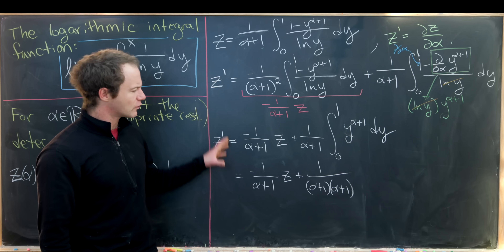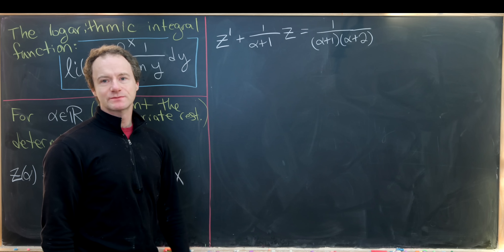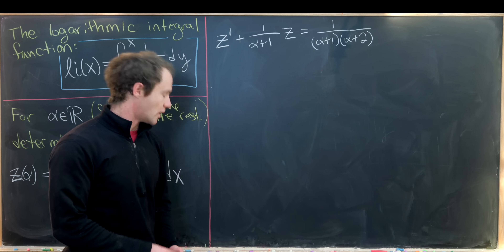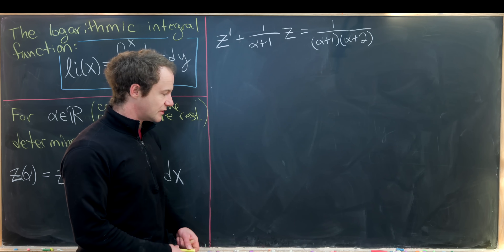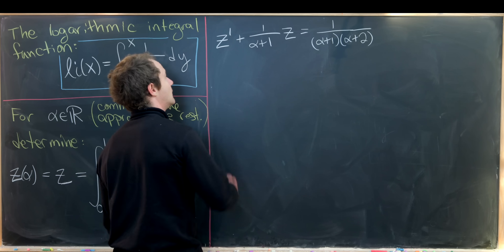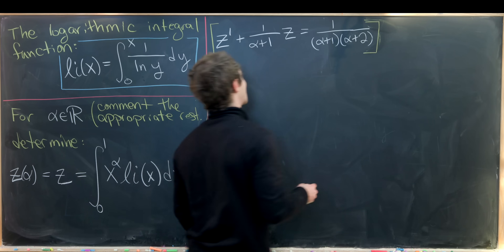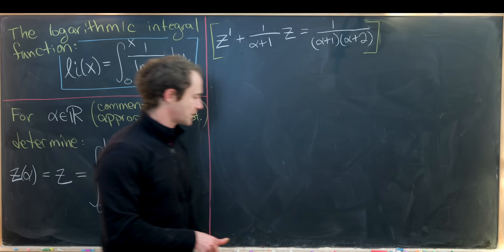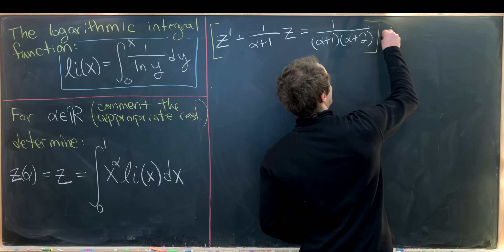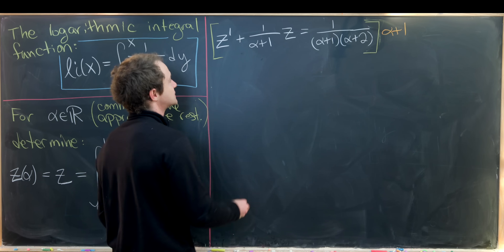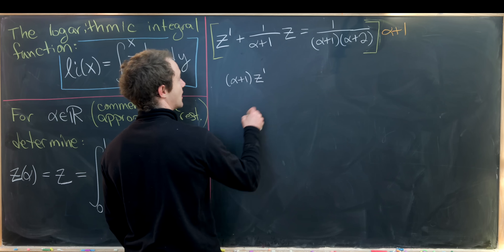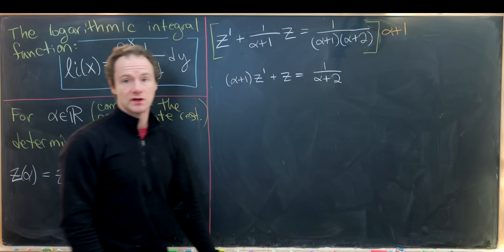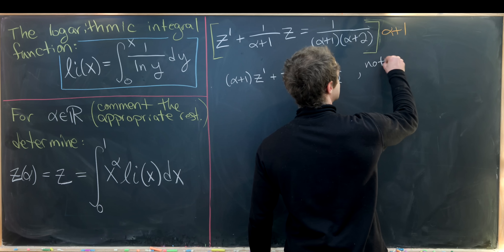Rewriting, our differential equation is z′ + 1/(α+1)·z = 1/((α+1)(α+2)). This is a first-order linear ODE, solvable by an integrating factor. Multiplying through by (α+1) gives (α+1)·z′ + z = 1/(α+2).